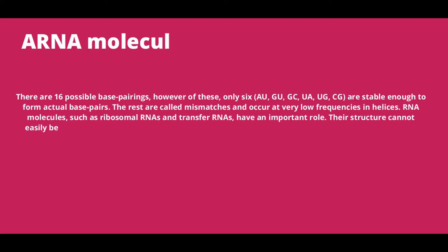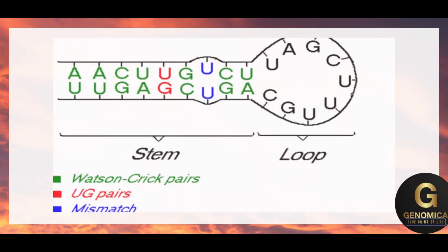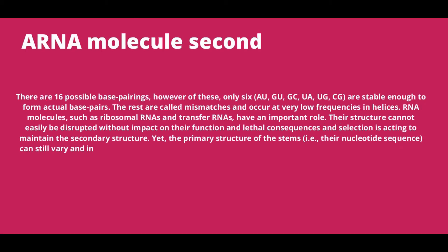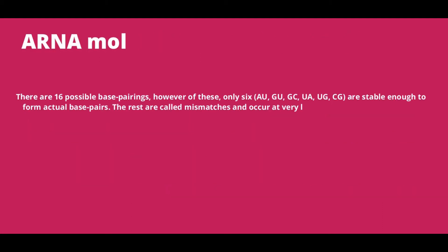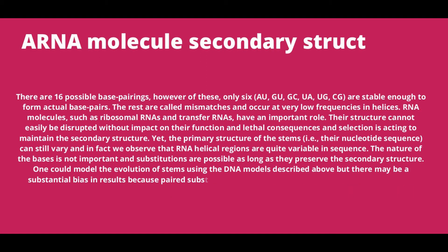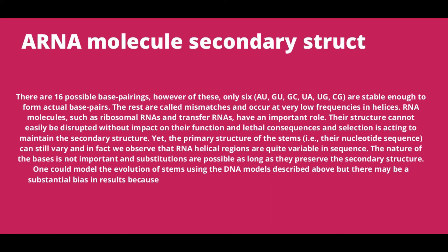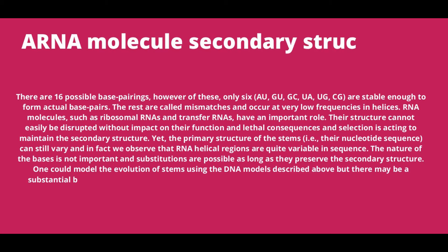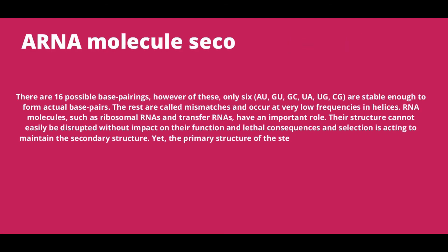The nature of the bases is not important, and substitutions are possible as long as they preserve the secondary structure. One could model the evolution of stems using DNA models, but there may be a substantial bias in results because paired substitutions would seem far less probable than they are in reality (see Joe et al., 2002). Statistics become invalid and it can have an effect on inferred phylogenies.